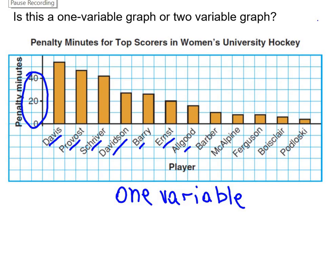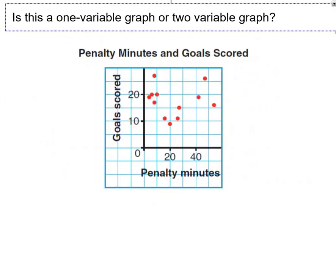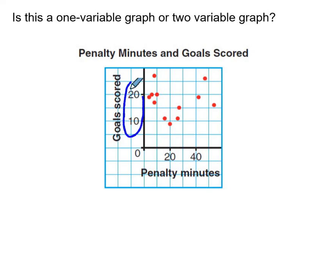Okay, let's take a look at a different graph. Now, is this a one variable graph or two variable graph? Let's take a look at the axis. Now, the vertical axis, notice that it's goals scored.